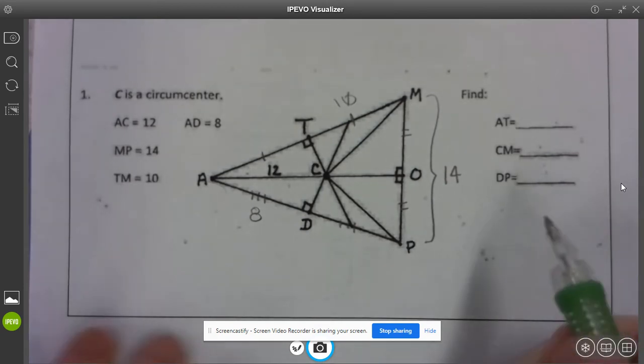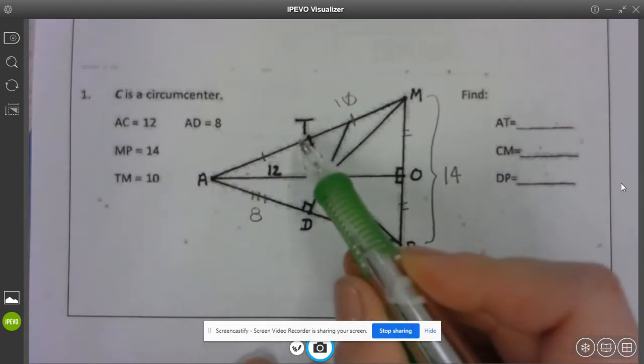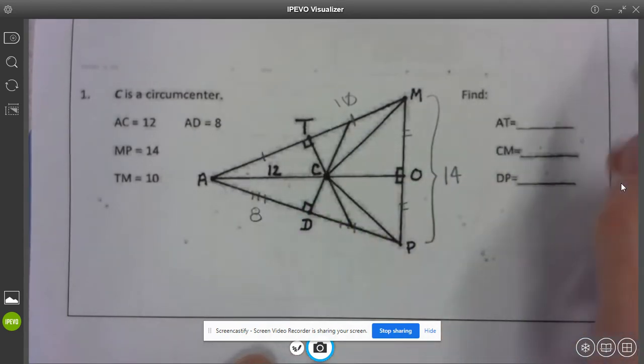So I need to find AT well, AT is congruent to TM so this would also be 10.